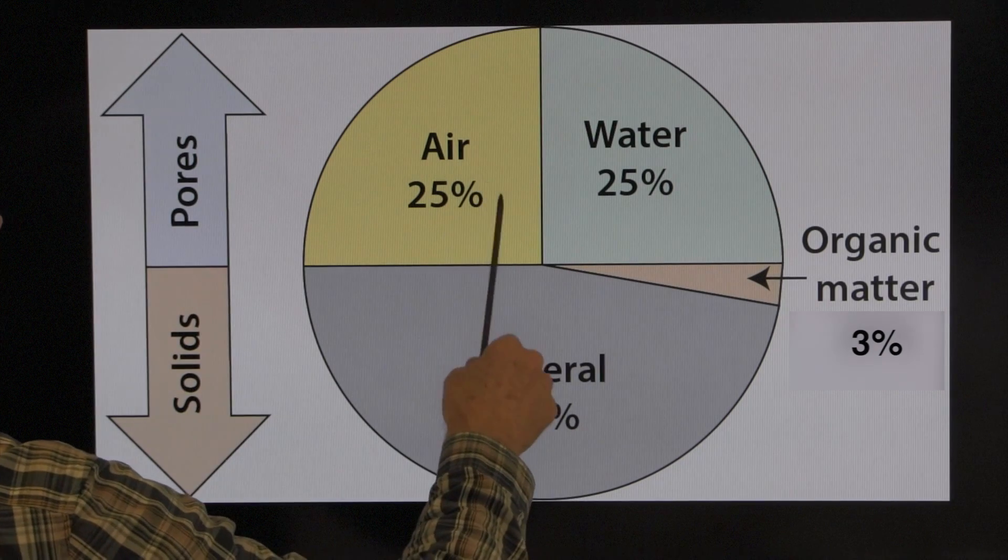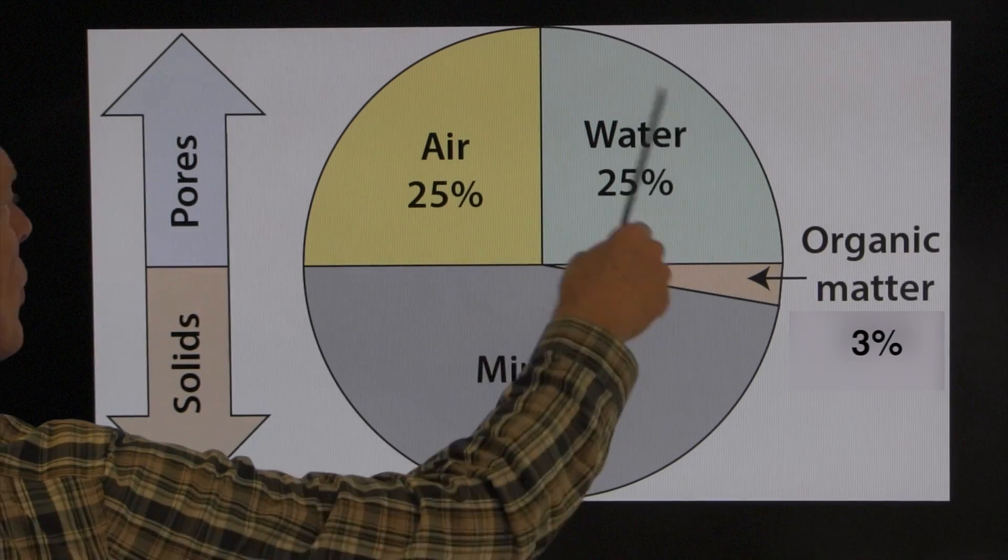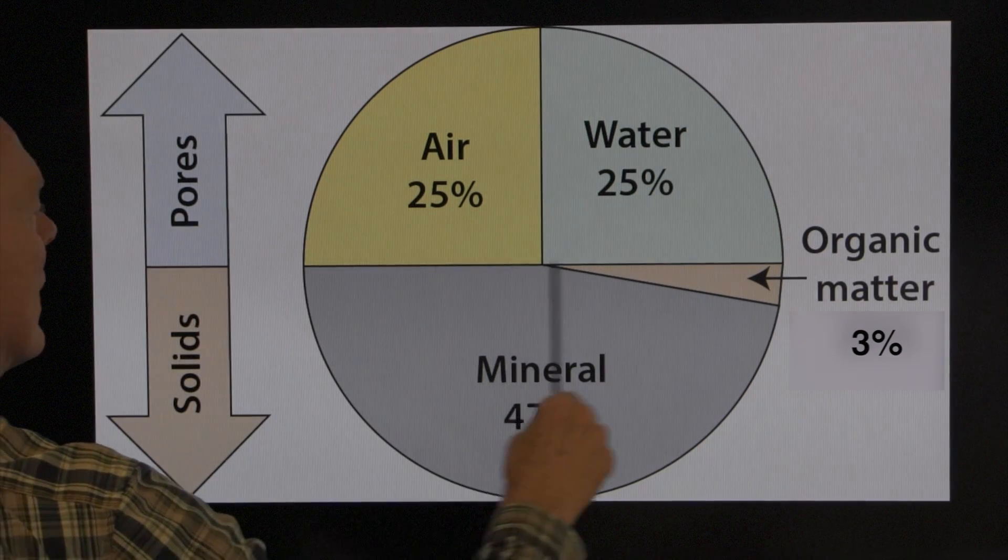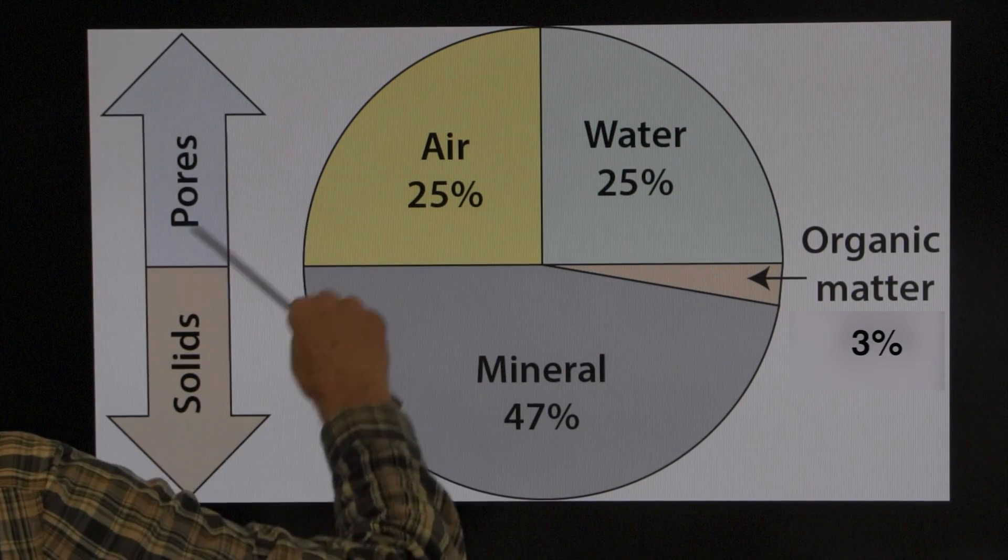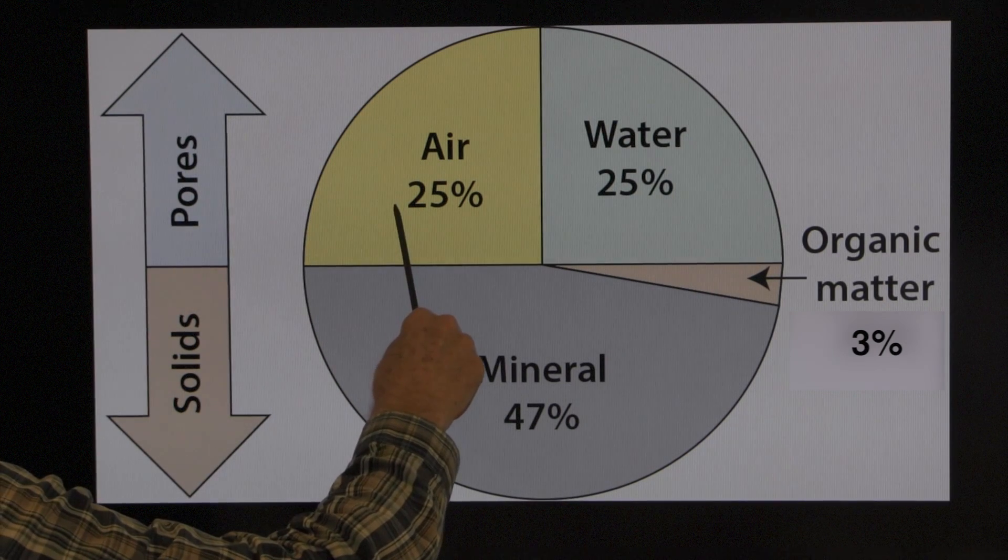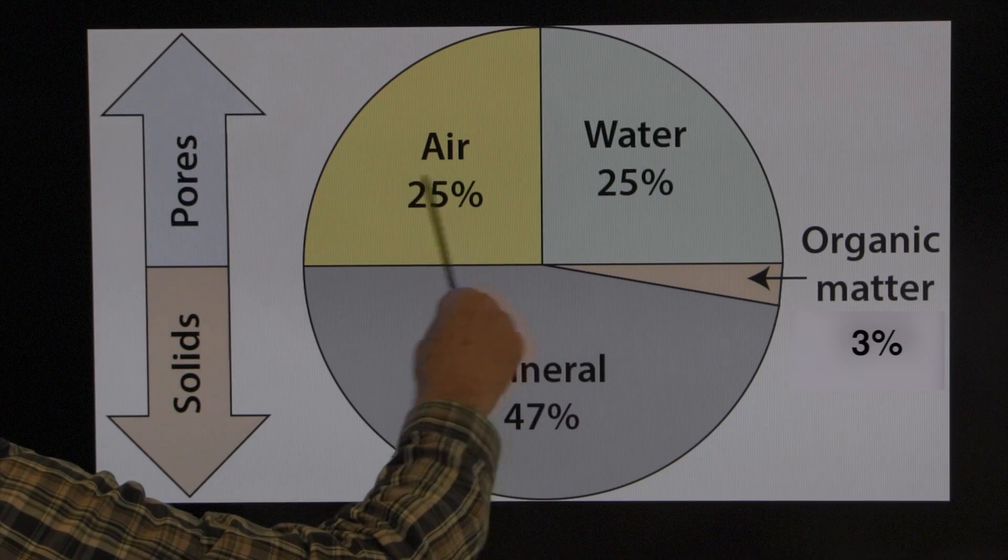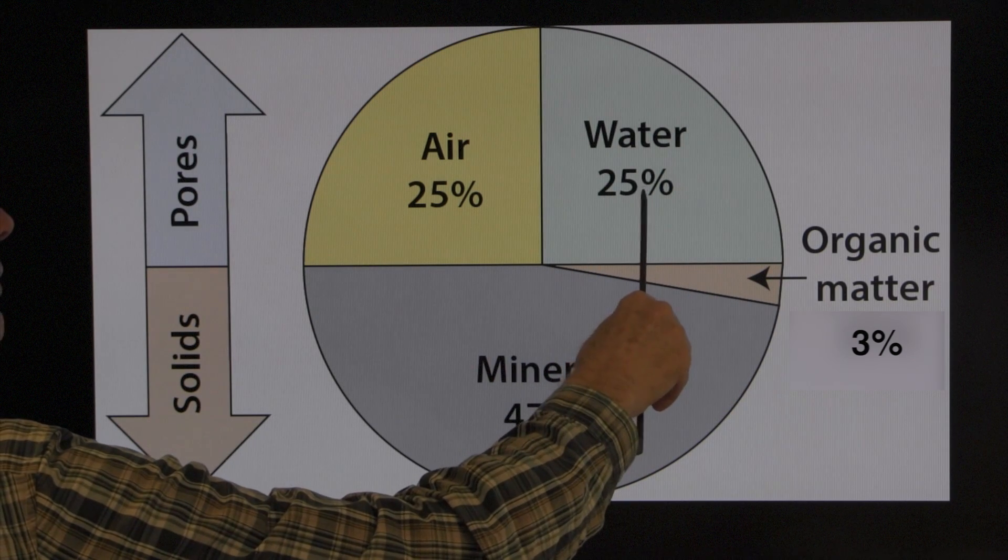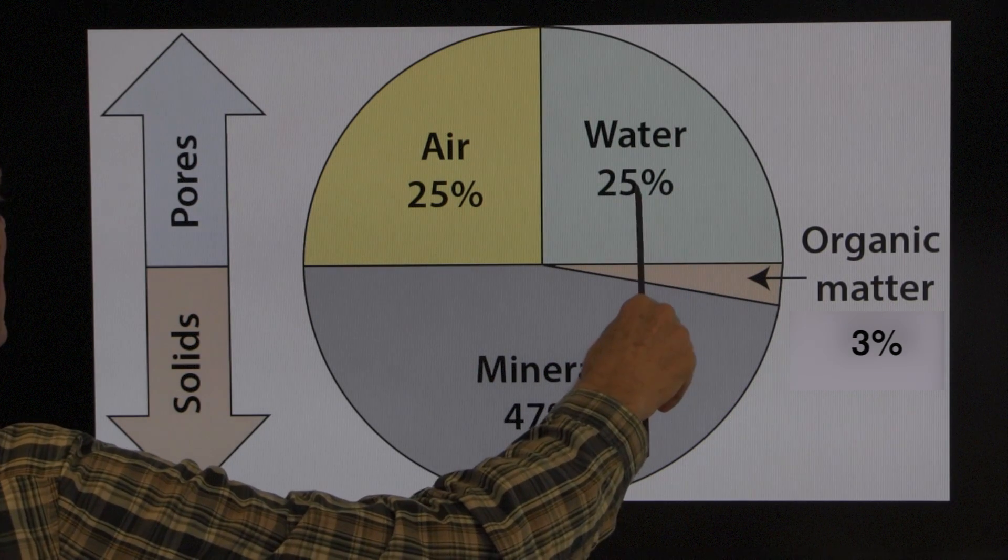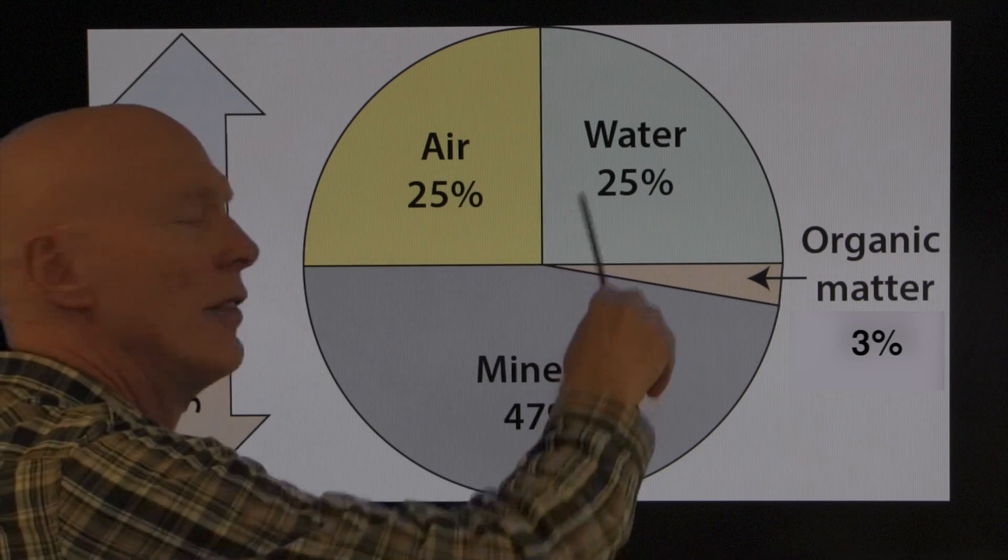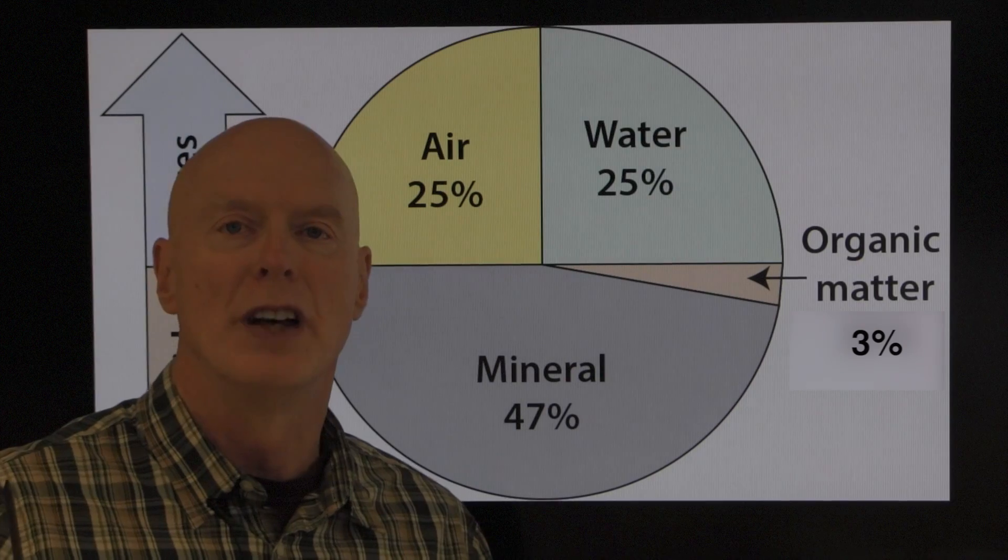Typically you have 25% air and 25% water, and this is pores because the pores are filled with air and the pores can be full of water. If the water evaporates, then we have less water by weight, but we have the pores that remain. And if the water evaporates, then the air will just move in, right?